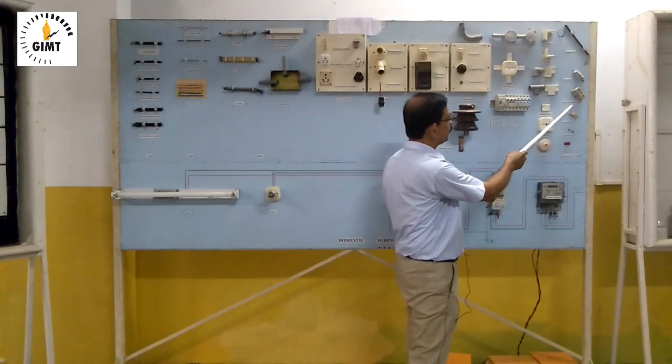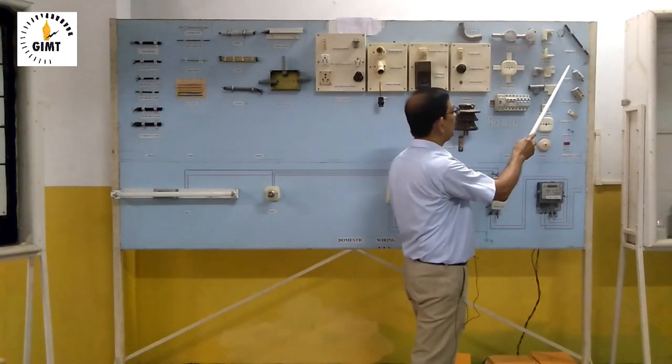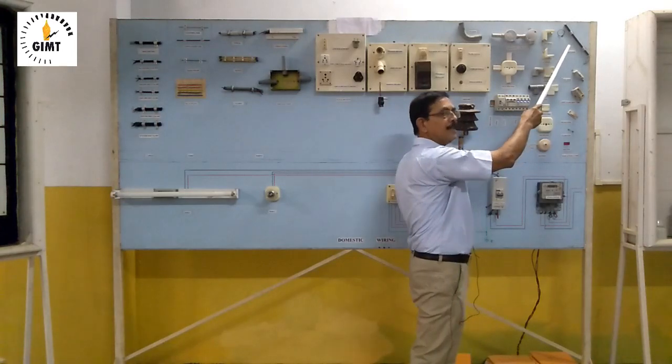Then Kit Kat fuse, then porcelain body fuse, then HRC fuse—HRC means high rupture capacity fuse. Then barrel fuse. This is used in transformer only.